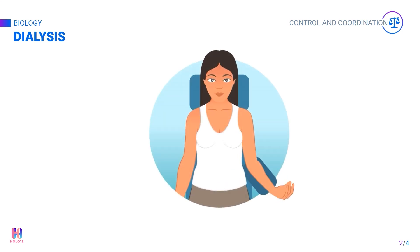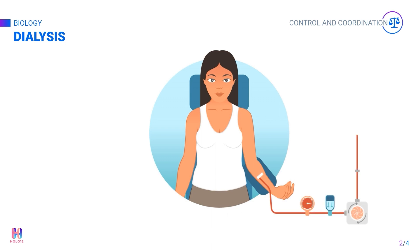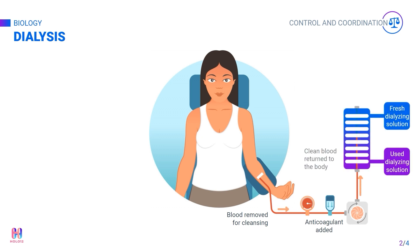The dialysis machine acts as an artificial kidney and filters the blood. Blood is carried outside the body through tubes into the machine where it is filtered, and then moved back into the body. The machine is connected with the blood vessels in the patient's arm. Blood moves out of this vessel into the machine where it is first mixed with anticoagulants, which are necessary to avoid clotting of the blood.